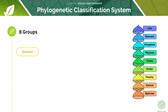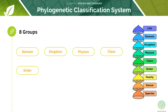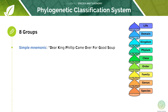There are eight groups in the classification system that you should know. The first one is domain, the next is kingdom, then phylum. There is a simple phrase to help you remember the stages.